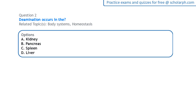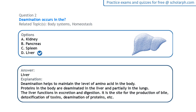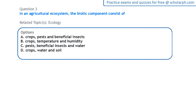Next question on body systems: deamination occurs in the liver. Deamination helps to maintain the level of amino acids in the body, so it occurs majorly in the liver. Partially it also occurs in the kidney.